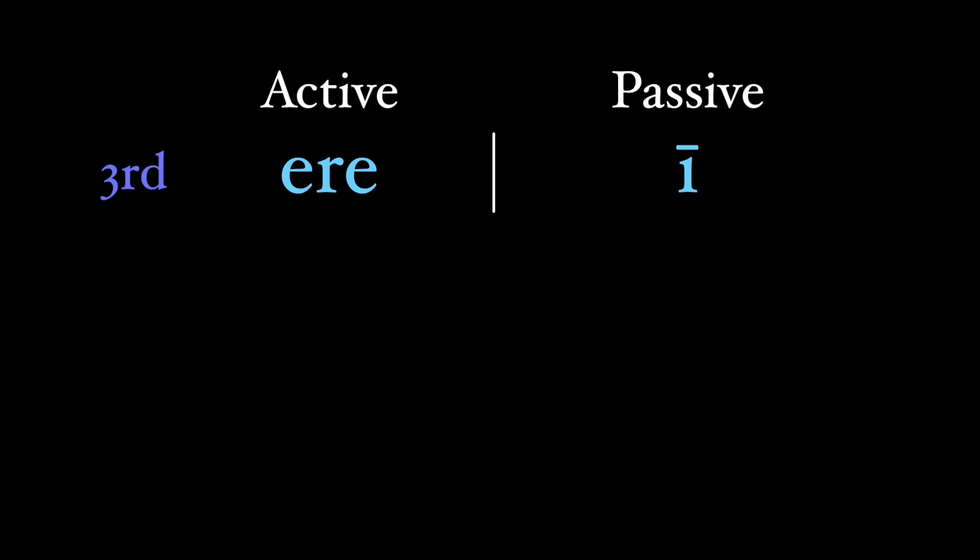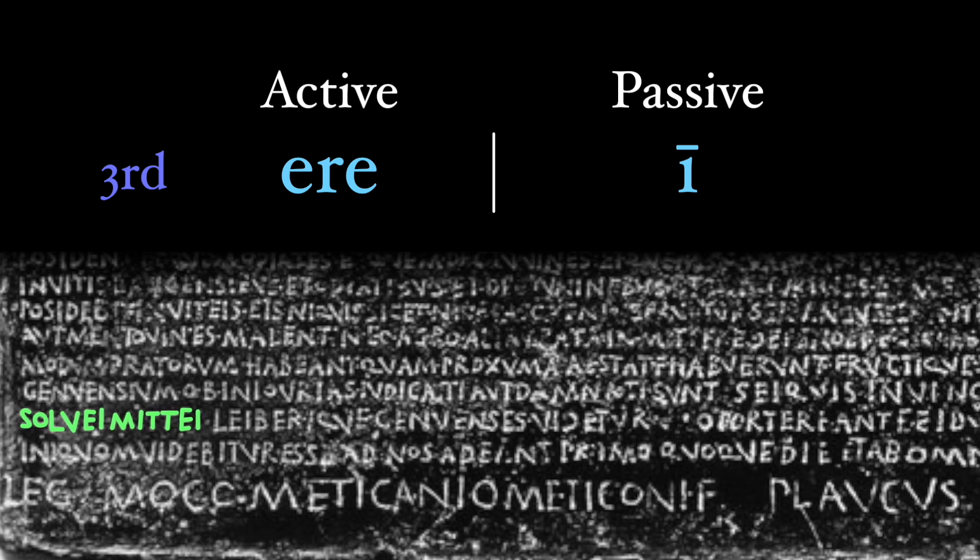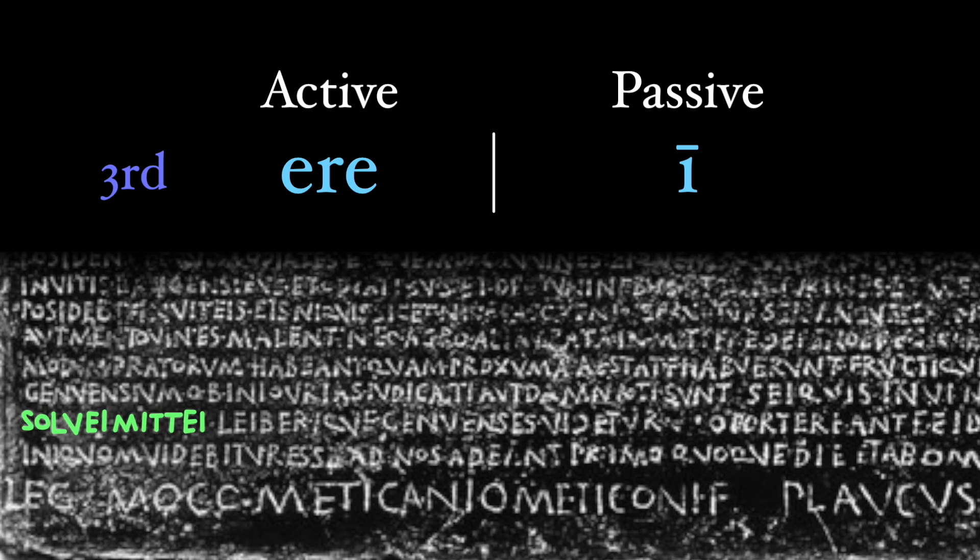The origin of the present passive infinitive seems to lie in this third conjugation form of a long ī. By looking at other languages like Sanskrit, it appears that the infinitive ending in ī is the original passive, in contrast to the active infinitive ending in -re. And we see this long ī for passive infinitives in very early Latin inscriptions.